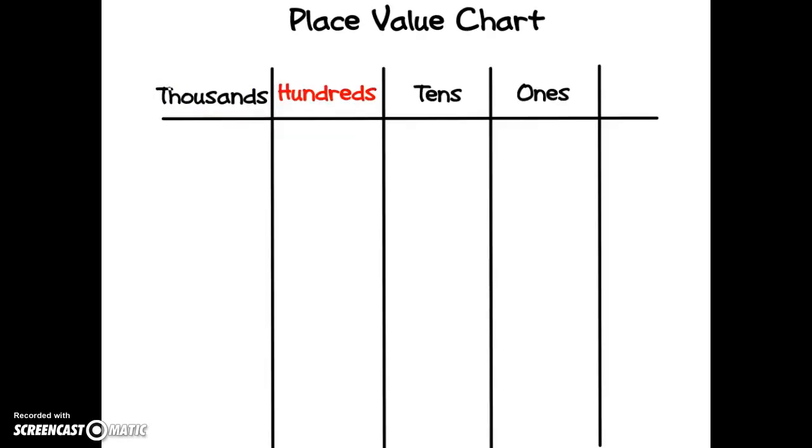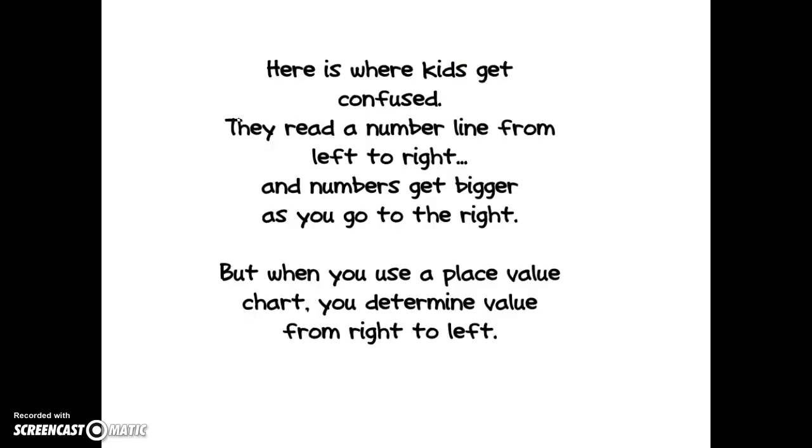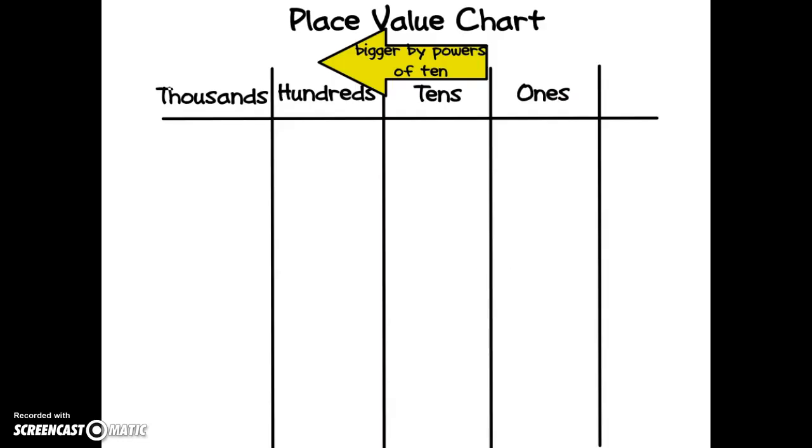Thousands are bigger than hundreds which are bigger than tens and bigger than ones. Here's where kids get confused. They read a number line from left to right and the numbers get bigger as you go to the right. When you use a place value chart, you determine value from right to left. You can see as we move from ones to tens they get bigger by powers of ten.